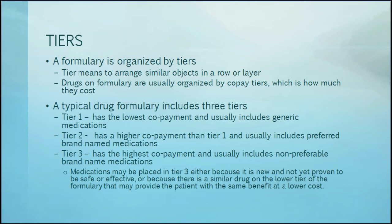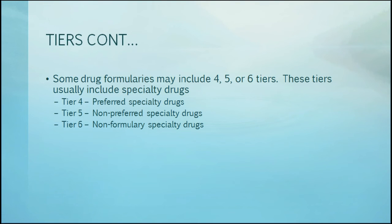Medications may be placed in Tier 3 either because they are new and not yet proven to be safe or effective, or because there is a similar drug on a lower tier that may provide the patient with the same benefit at a lower cost. Some drug formularies may include 4, 5, or 6 tiers, which usually include specialty drugs. Tier 4 includes preferred specialty drugs. Tier 5 includes non-preferred specialty drugs. Tier 6 includes non-formulary specialty drugs.